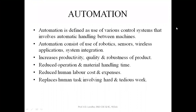Automated assembly lines form the base of automation. Automation is the use of various control systems involving automatic handling between machines, robotic sensors, and other system integration. Due to automation, there is an increase in productivity as well as robustness of the product. The automated assembly line is used for high volume production where parts require multiple processing operations, each performed at workstations that are physically integrated by mechanized work transport to form an automated production line.